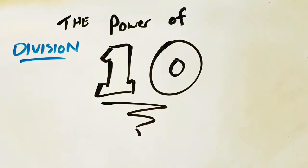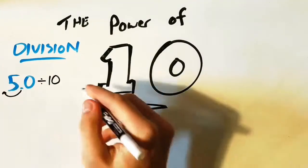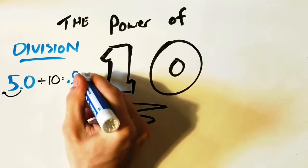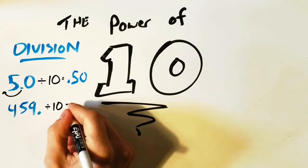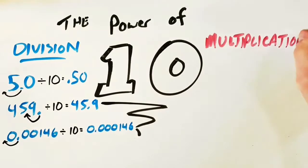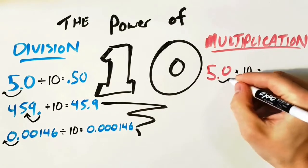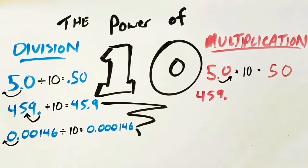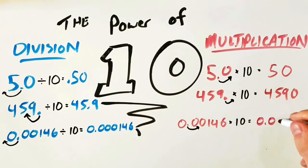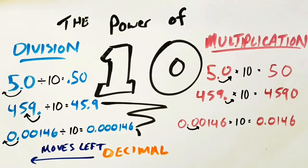What's so special about this number? If we take a number and divide it by 10, the decimal point moves left. For instance, 5 divided by 10 turns into 0.5, or 459 divided by 10 turns into 45.9, or 0.00146 divided by 10 turns into 0.000146. Multiplication does exactly the opposite — if I take 5 and multiply by 10, the decimal moves to the right: 5 turns into 50, 459 times 10 turns into 4590, and 0.00146 times 10 turns into 0.0146. So dividing by 10 moves the decimal left, and multiplying moves it to the right.